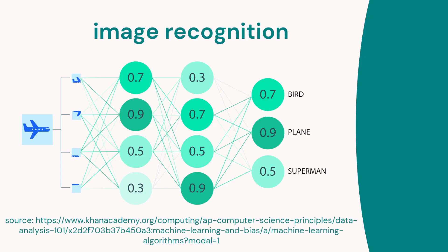We can see an example of neural networks used in image recognition. An image is input, the nodes in the neural network have weights that adjust until the output matches our examples. After training on many examples, when we input a new image we can determine which output category it belongs to. In this example we have an image of a plane, and on the output on the right-hand side you can see 'plane' has the highest value.